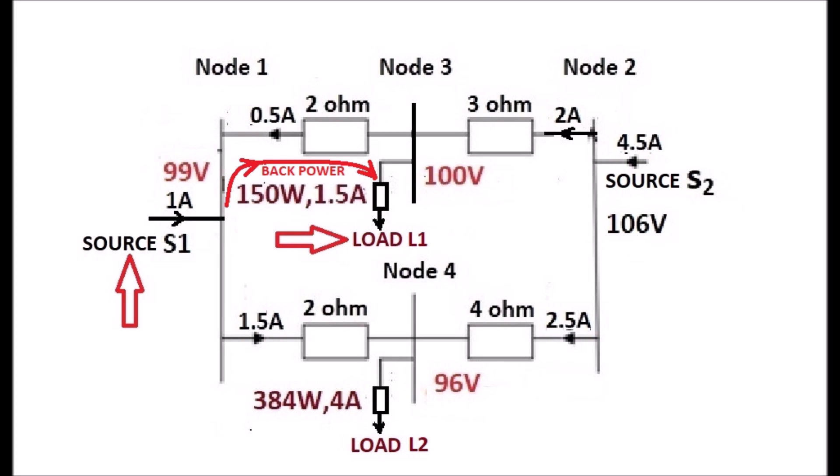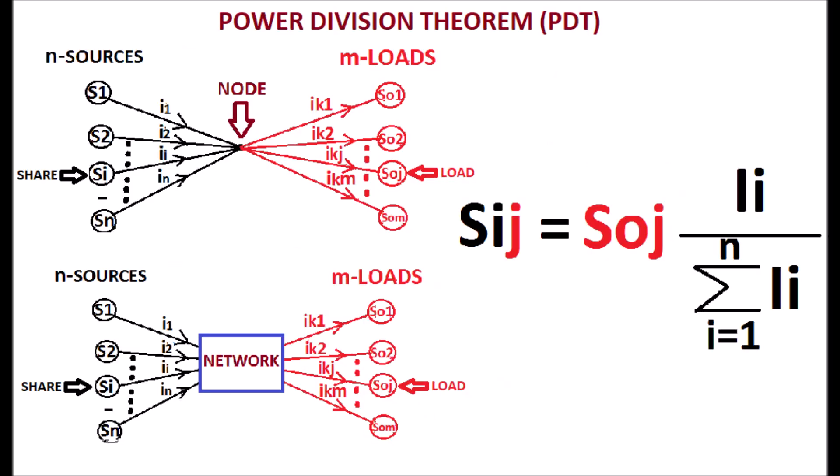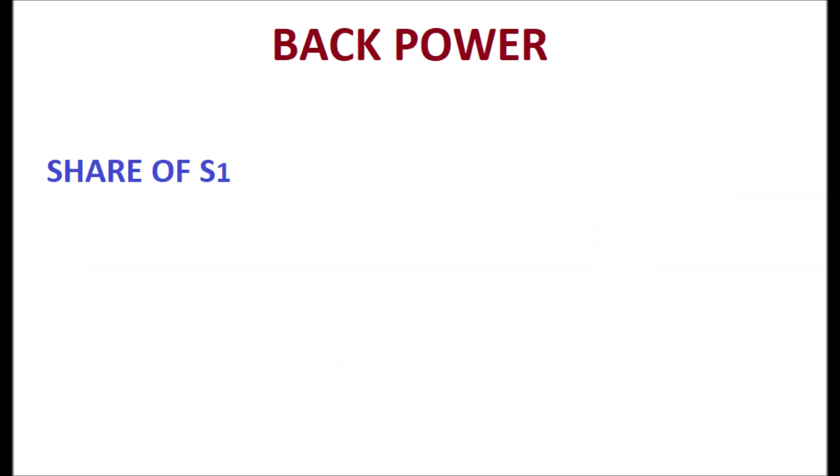which is calculated using power division theorem. The power of the source S1 to the load 1, which is equal to the load power 1 of 150 watts, is multiplied by the ratio of the source current 1, which is 1 ampere, to the total source current of 5.5 ampere, which equals 27.27 watts.